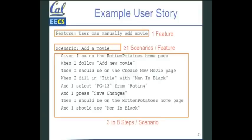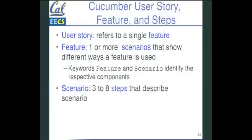Just you have to start these sentences with given when and then for the steps. Scenario is the name of the thing that you're doing. You may have multiple scenarios for a given feature. So that's the restrictions. This slide just repeats it. So a user story has one feature. A feature has one or more scenarios. And in the Cucumber language, you use keywords feature and scenario to identify the feature and scenario.